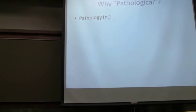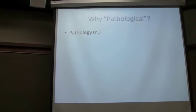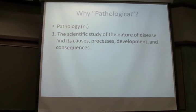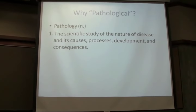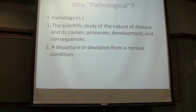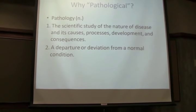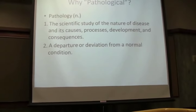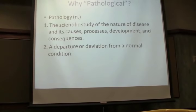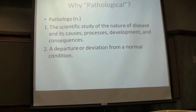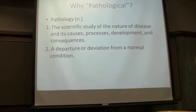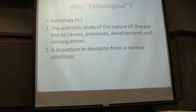So first, why pathological? So let's familiarize ourselves with what pathology means. The scientists study the nature of disease and its causes, processes, development, and consequences. But that also means a departure or deviation from the normal condition. For example, we know so much about the brain because of all the things that go wrong with the brain. We know that certain parts of the brain are responsible for certain things like language and what have you, because we've studied when we've had injuries or diseases which affect particular parts of the brain.